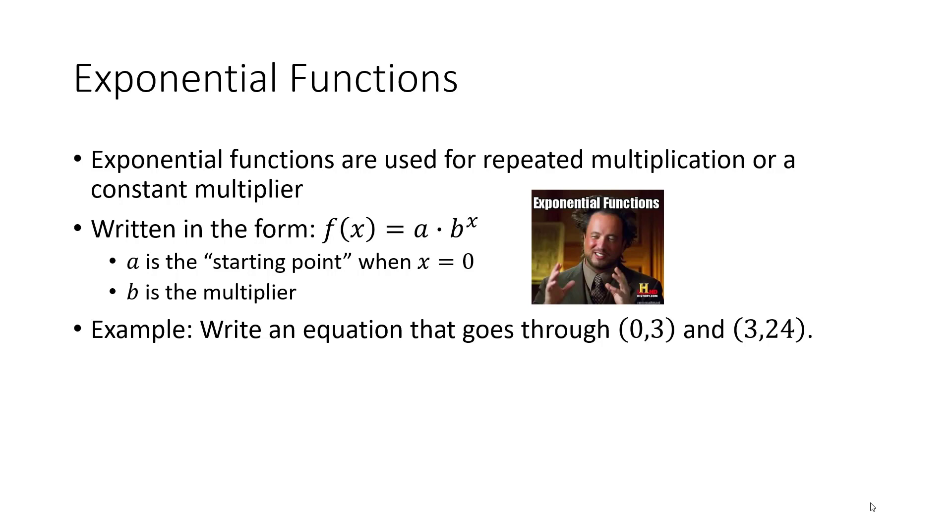So for example, if I want to write an equation that goes through (0,3) and (3,24). Here x is equal to 0, so 3 is my starting point. So I know my starting point is a. So let's just use y for the f of x for now. We've got y equals my starting point, which is 3, times b to the x.